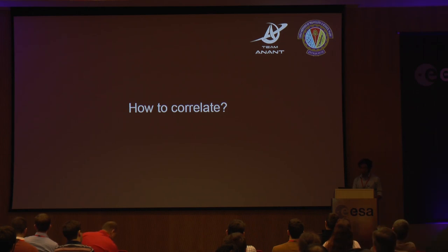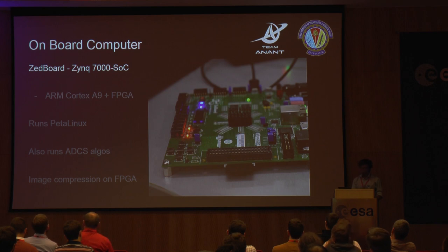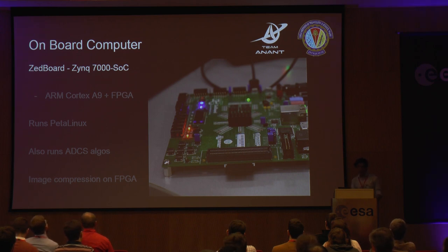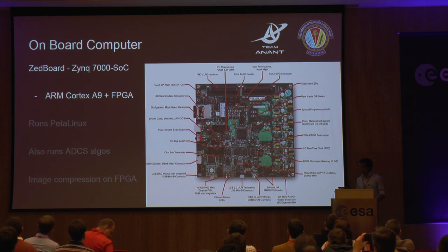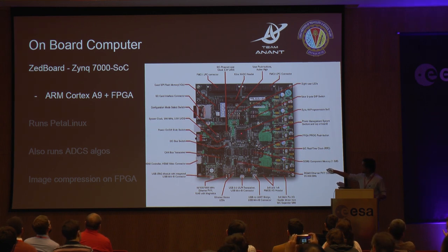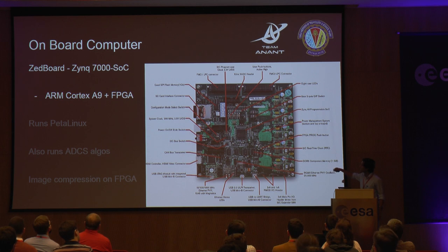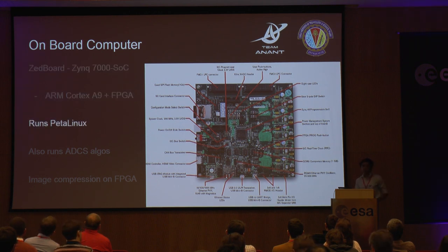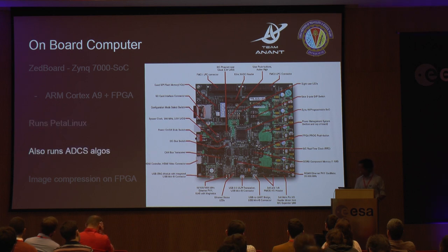The biggest case of this correlation for me is the board we're using to test the whole onboard computer — the Z-Board. It's manufactured by Xilinx and contains a Zynq 7000 system-on-chip, which is made of an ARM Cortex A9 processing system and an FPGA — also called programmable logic. It uses GPIOs and an SD card to boot. My favorite part is that it runs PetaLinux, an open source operating system designed by Xilinx itself. We also run ADCS algorithms on this board, so the ADCS does not have its own separate microprocessor.